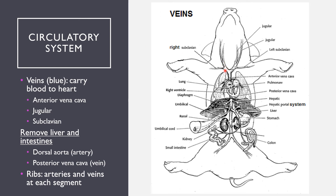When blood is coming back through the body, it needs to flow through veins. In the anterior of the pig, blood flows to the brain via the carotids and then flows back down through the jugulars. You have the subclavian veins which return blood from the appendages, and those all condense down into the anterior vena cava, which flows back into the heart. On the posterior side, veins flow back into the posterior vena cava, which runs the length of the body and returns blood back to the heart.